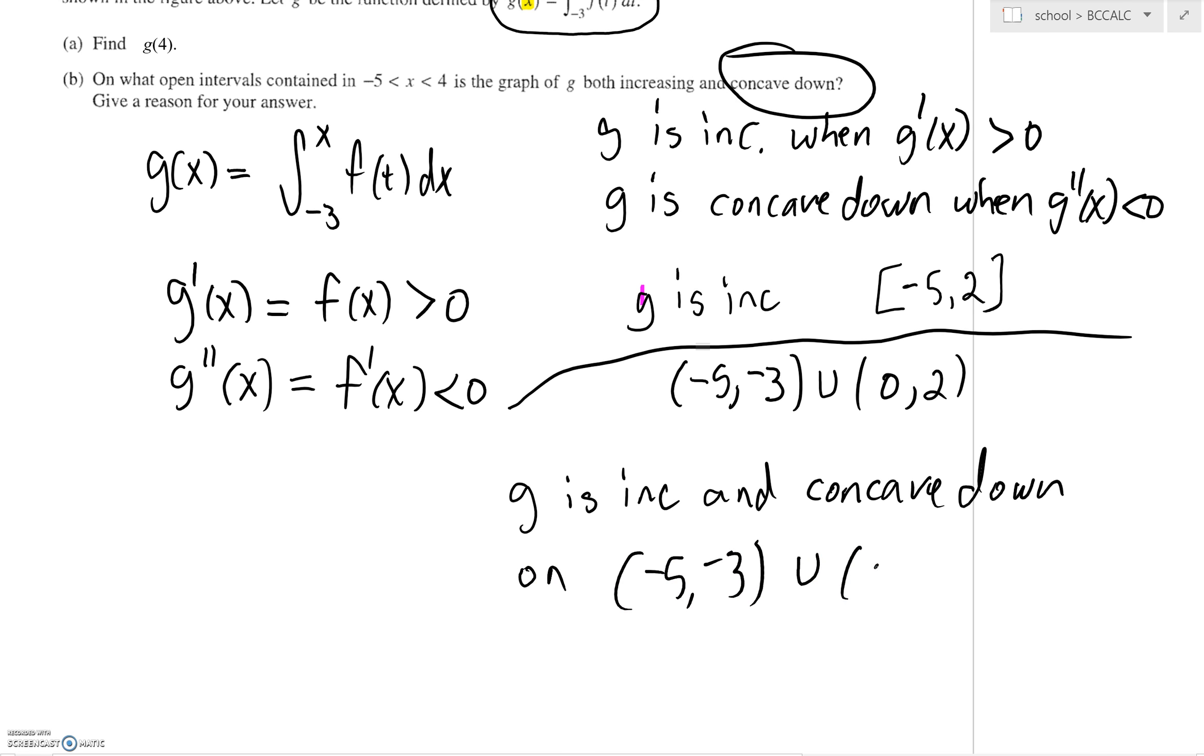Because they're asking for a reason, the reason is g prime of x is greater than zero—that's the increasing part—and g double prime is less than zero. So g prime is greater than zero and g double prime is less than zero.